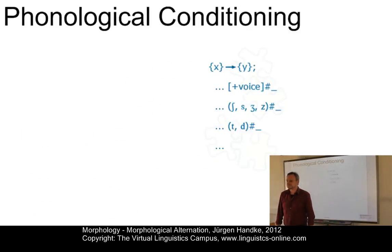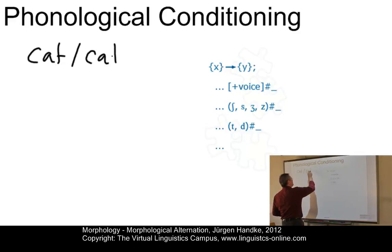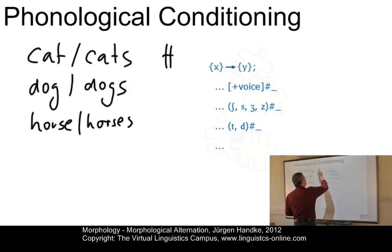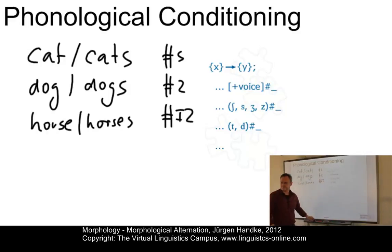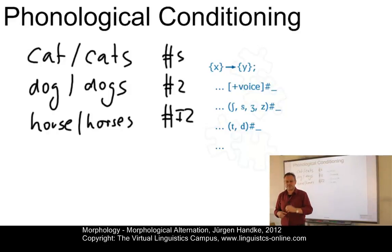Phonological conditioning is the first of these. Consider the following word pairs: 'cat' and 'cats', 'dog' and 'dogs', and 'horse' and 'horses'. We have plural affixes: /s/, /z/, and /ɪz/. In all three words the plural morph is phonologically different. However, the distribution of these allomorphs is complementary and can be predicted on the basis of the final stem consonant.